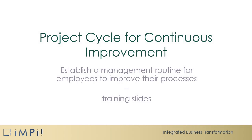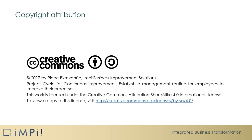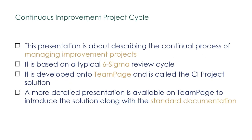This presentation is about the Project Cycle for Continuous Improvement — a management routine for employees to improve their processes. It describes the continual process of managing improvement projects, based on a typical Six Sigma review cycle, where the project leader presents project status to a management team. It is developed on TeamPage and is called the Continuous Improvement Project Solution.